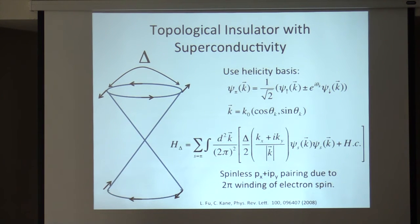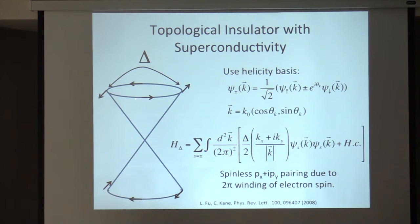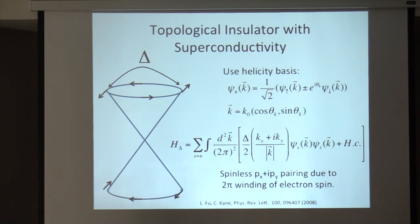Soon after three-dimensional topological insulators were discovered, people wondered what would happen if you induced superconductivity. It turns out you get something much like P-wave superconductivity, because if you consider Cooper pairing of electrons on opposite sides of the Brillouin zone and rotate them around, the spins of the electrons rotate around, giving an additional Berry phase. Thus the Cooper pairs have an intrinsic 2π winding from this Berry phase. More rigorously, you can rewrite the problem in terms of the helicity basis, in which case the pairing term acquires px + ipy pairing, which is a bit unusual because it actually preserves time-reversal symmetry.